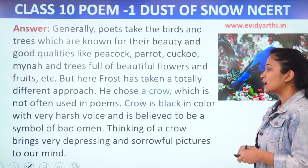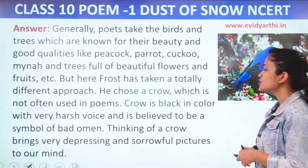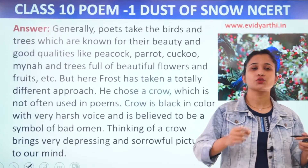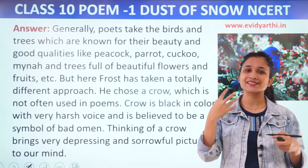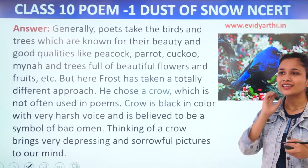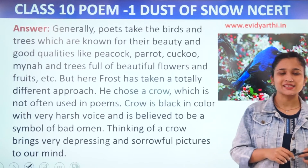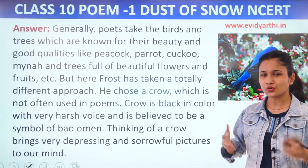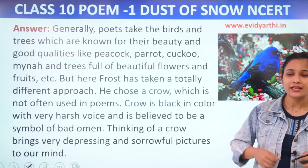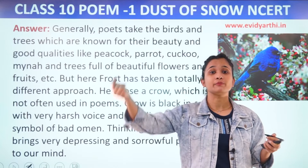Crow is black in color with a very harsh voice and believed to be a symbol of bad omen. The crow is black and its voice is very harsh and hard. People think that the poet used the crow to show the state of mind, and because of this crow, its depressing state of mind is reflected.